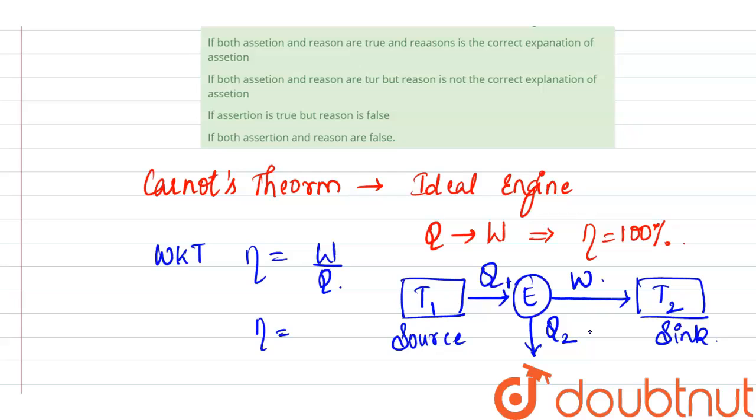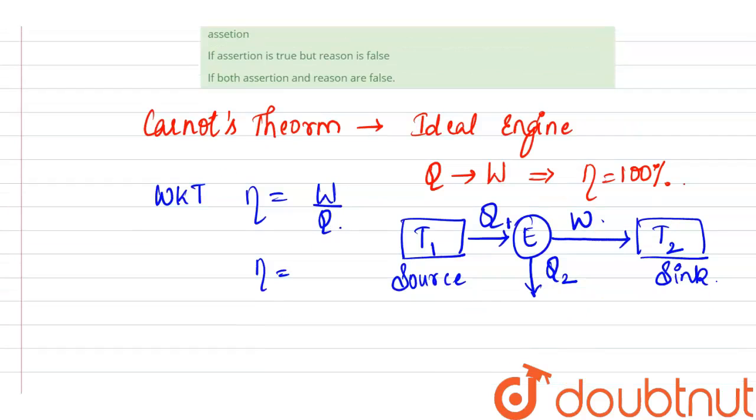So we know that from the heat engine theorem, Q1 is equal to Q2 plus W. So, Q1 is equal to Q2 plus W. So, W is nothing but Q1 minus Q2.